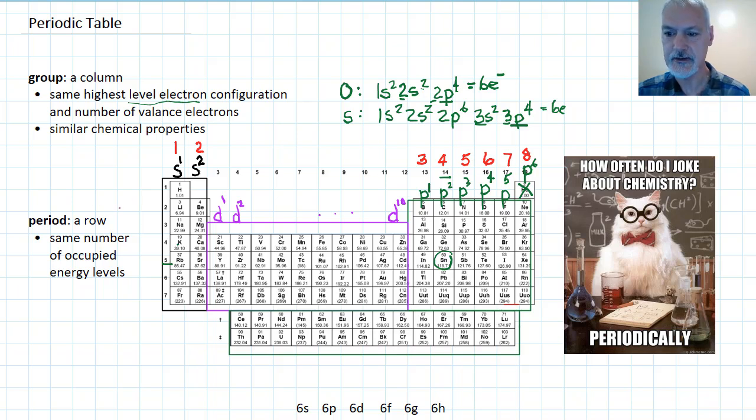Now the period gives us an idea of how many energy levels an atom has. So if I take a look at oxygen, for instance, it's got the 1s and the 2s. So this has two levels. You'll notice that it's located in period number two.